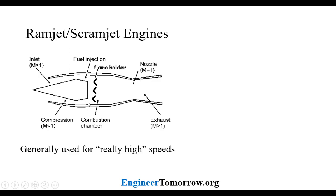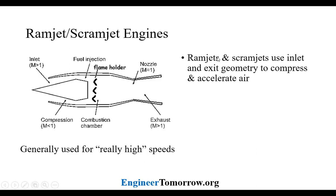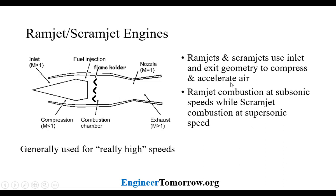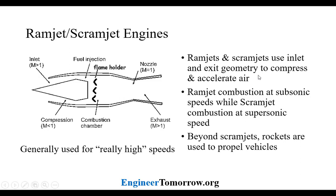The difference between ramjets and scramjets is the Mach number of the compression that occurs. While ramjets go subsonic in the compression process, scramjets do not, so they have a slightly different geometry. But you can think of the geometry as serving the purpose of the compressor and turbine parts of the turbojet. These are used for really high speeds. To summarize, the ramjets and scramjets use inlet and exit geometry to compress and accelerate the air. Ramjet combustion occurs at subsonic speeds, while scramjet combustion occurs at supersonic speeds. If you want to go higher than this, you're probably going to look at a rocket-type application, since in space you don't have incoming air for the combustion process and will need onboard propellant.